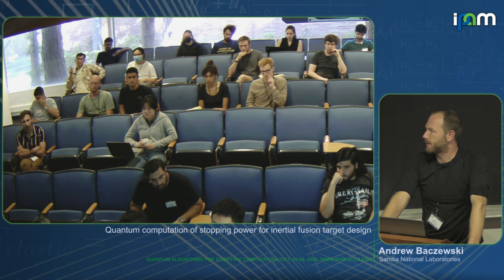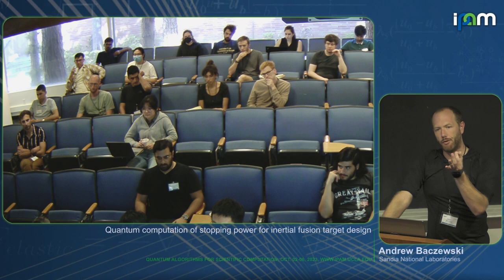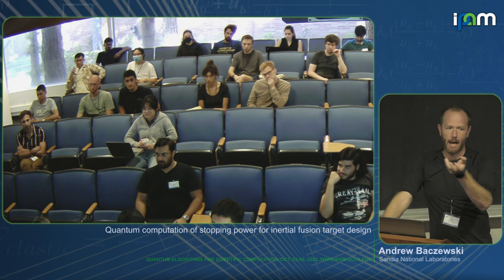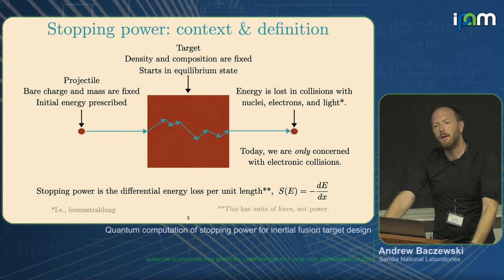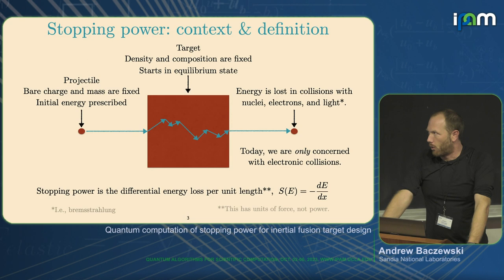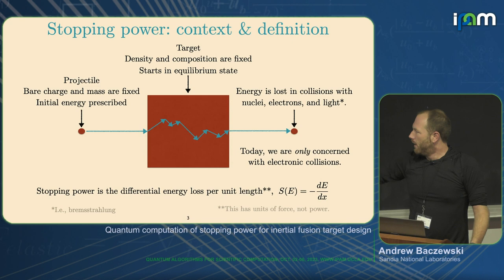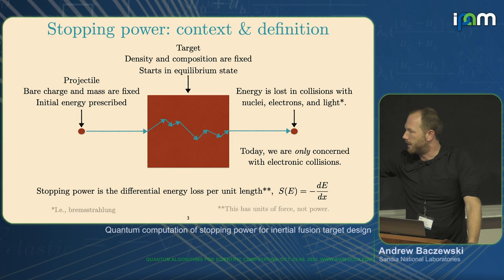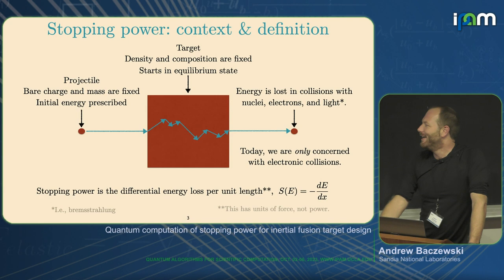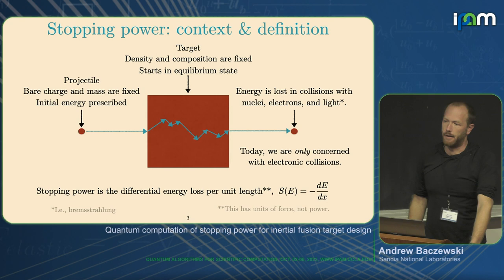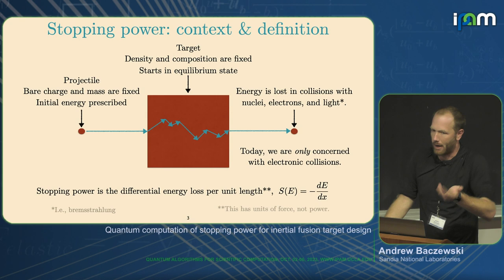In the stopping literature, people talk about the effective charge state of the particle as it traverses the medium — it will pick up electrons from the target medium. For the examples considered today, the projectile is positively charged, though negatively charged is also a well-defined thing. Stopping power, to give you an equation, is the differential energy loss per unit length — dE/dx — and it's also energy-dependent, varying as a function of the instantaneous kinetic energy. Notably, this has units of force, not power.